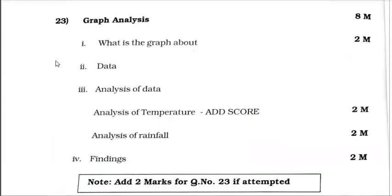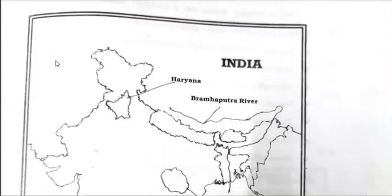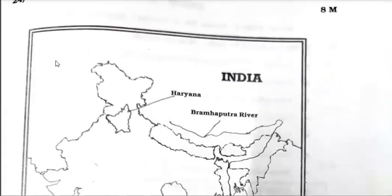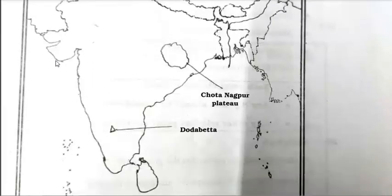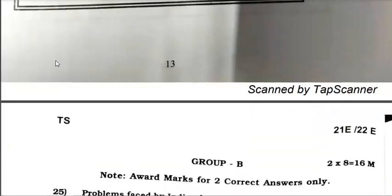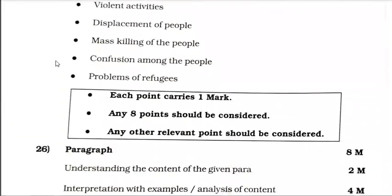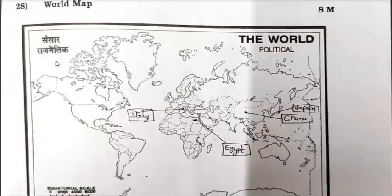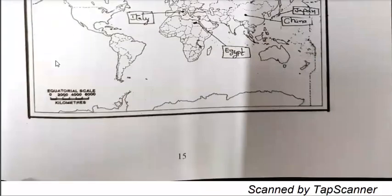For graph analysis, you can see the marking scheme here. If you are more confident, you can go for revaluation or re-correction, but maximum you will not get more marks. By any mistake, maximum improvement is 0 — no improvement in revaluation. If you are confident, you can go for that. The bit paper answer key is also at the end. For the world map with country names — Italy, China, Egypt, Japan — 4 to 8 marks.